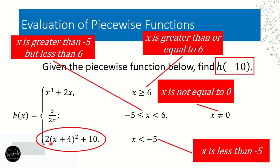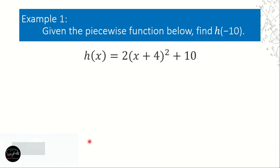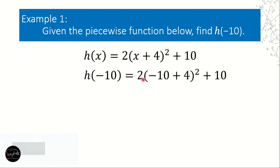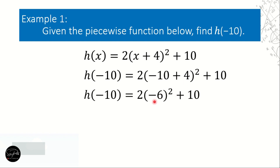So we will use h of x is equal to 2 times the quantity x plus 4 to the second power, plus 10. We remove x and replace it with negative 10: h of negative 10 equals 2 times the quantity negative 10 plus 4, squared, plus 10. Following PEMDAS, we evaluate the parenthesis first: negative 10 plus 4 is negative 6.